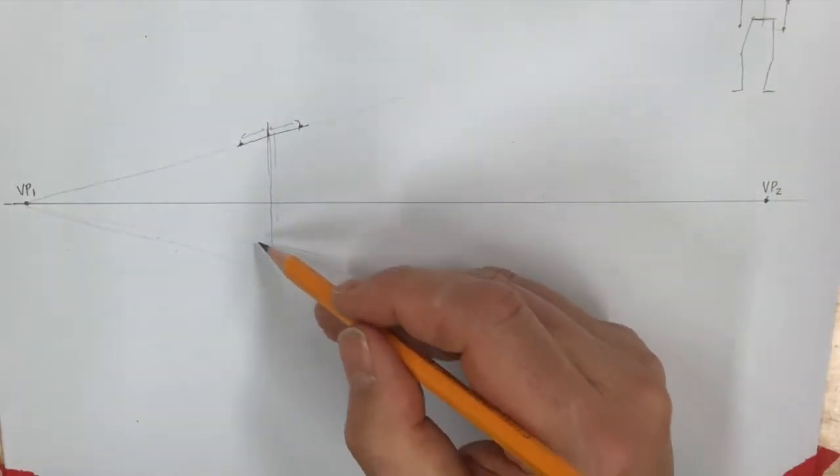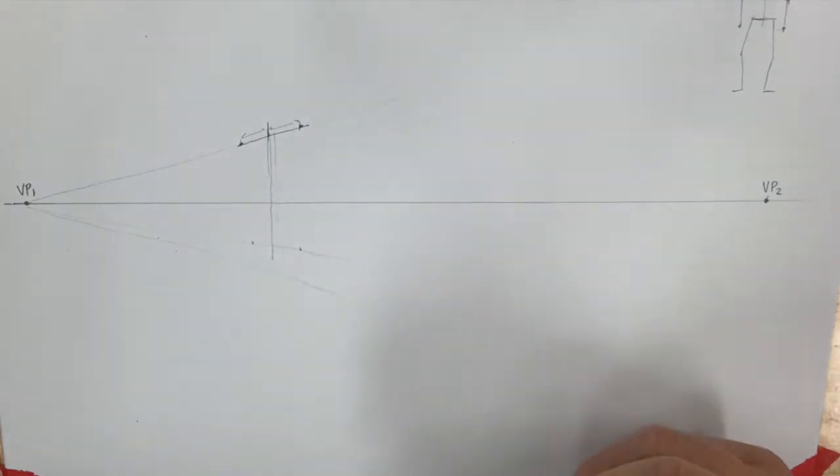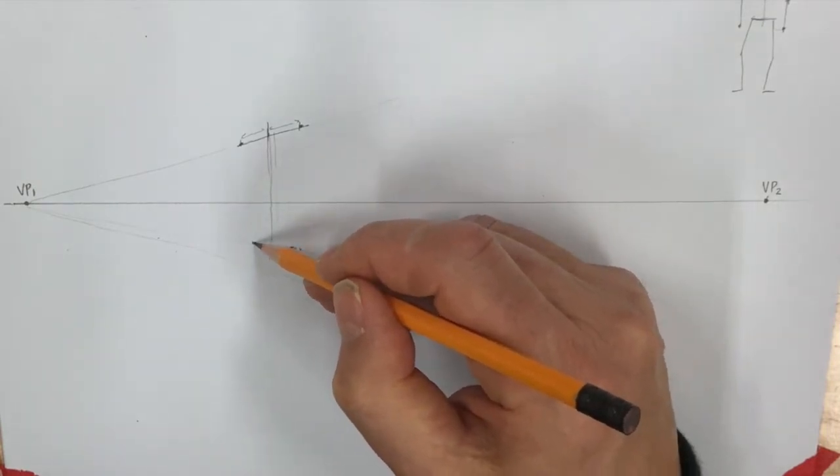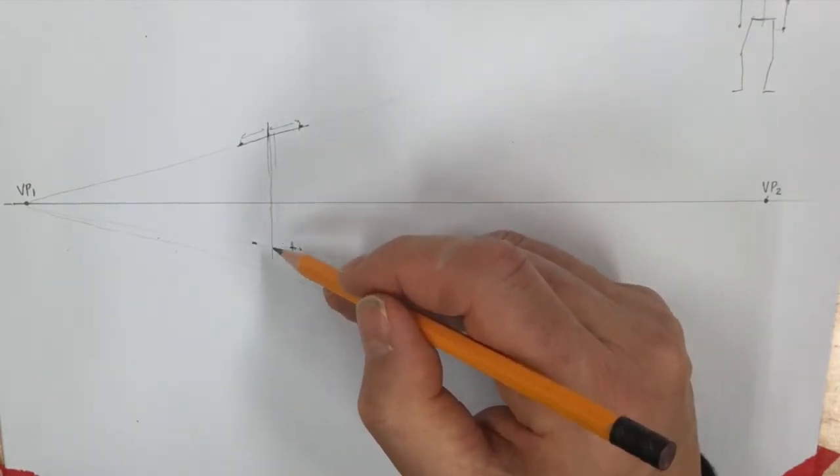Hips are going to be narrower than the shoulders, right? So the hip joints, I'm actually going to make them a little even narrower than I drew them there, so those are going to be my two hip joints.